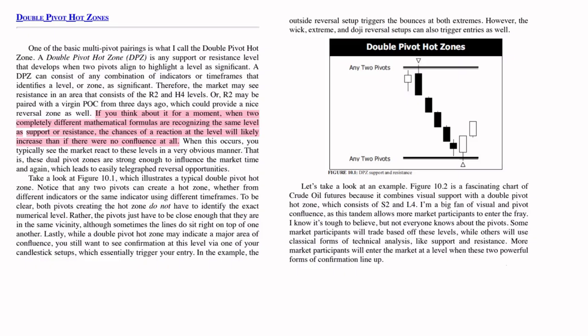When we move into the next topic discussing double pivot hot zones, it will be very easy and understandable. If you are watching the 'Secret of the Pivot Boss' book reading for the first time, do watch the playlist which contains all the chapters except Chapter 3 and Chapter 4, so that you will be able to understand what this book contains — what pivots are and what the different types of pivots are.